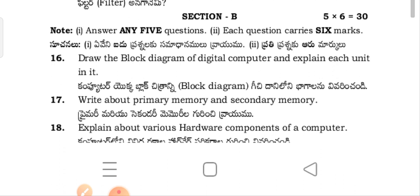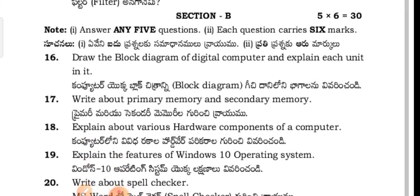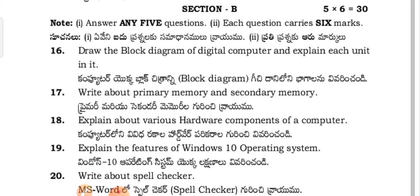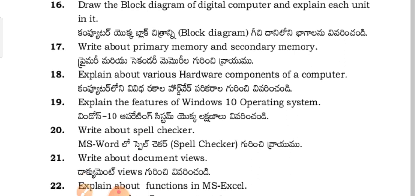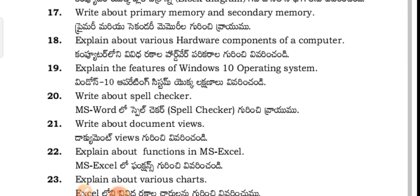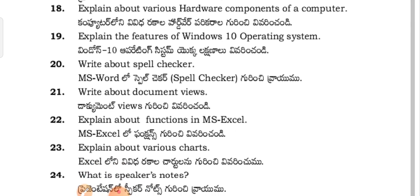Section B questions: Draw the block diagram of a digital computer and explain each unit in it — you have already studied this in GFC. Explain the difference between primary memory and secondary memory. Explain the various hardware components of the computer.